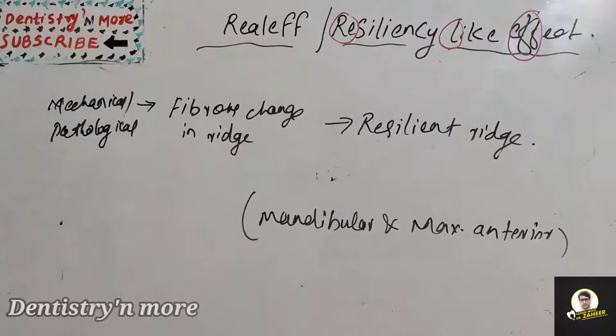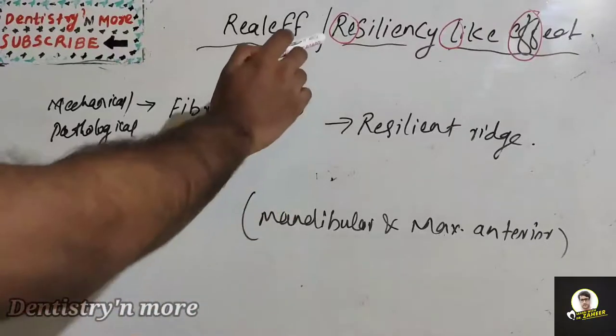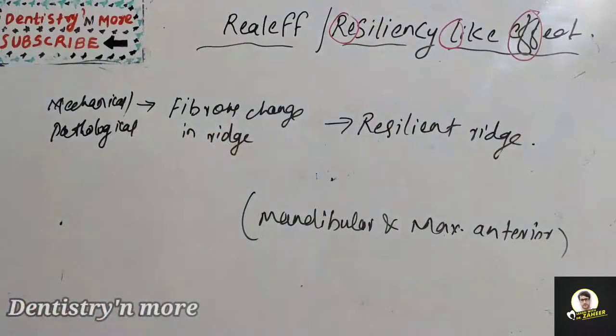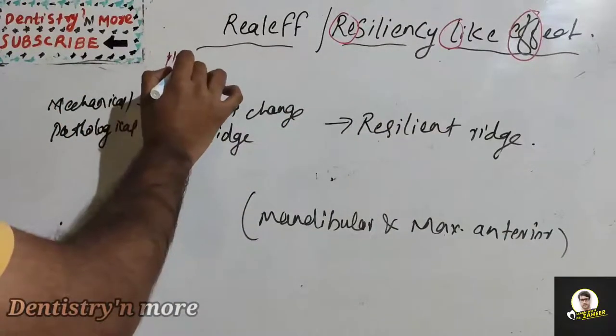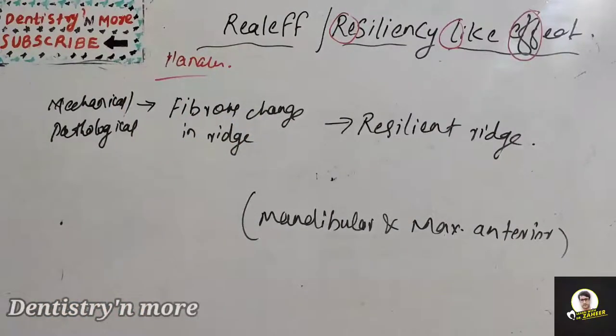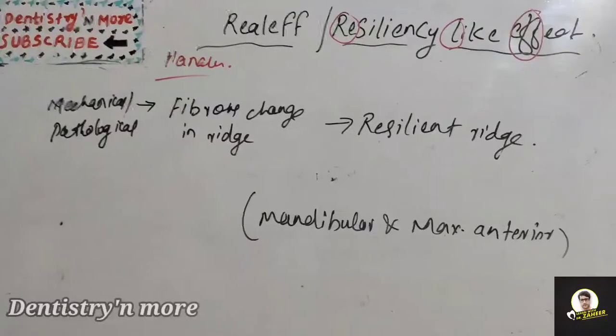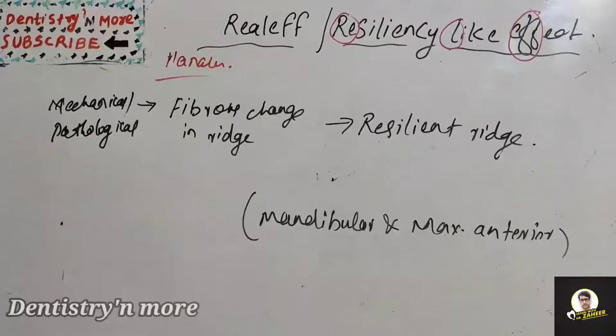Realeff, the resiliency like effect, was first reported by Hanau. The complete denture rests on basal seat area, which is primarily oral mucosa and residual alveolar ridge. The oral mucosa on which the complete dentures are fabricated is displaceable and also compressible. This factor was first described by Hanau as Realeff.